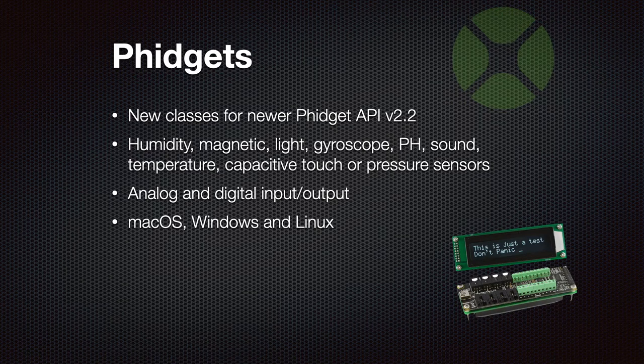With the Phidgets classes you can build your own custom IoT devices — like your own weather station where you measure sunlight or air pressure and then decide whether to turn a motor on or off for moving your sunshade in the office. Or you can build whatever you like. The rewrite of the classes was needed because the newer API changed significantly from the old API, so we had to rewrite all the plugin classes.